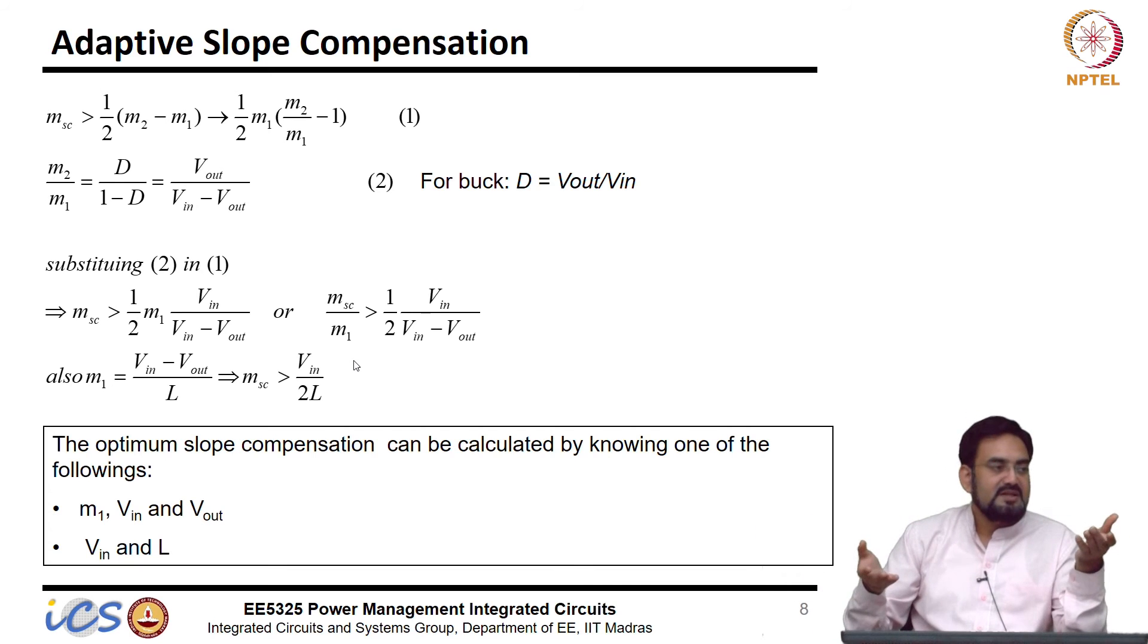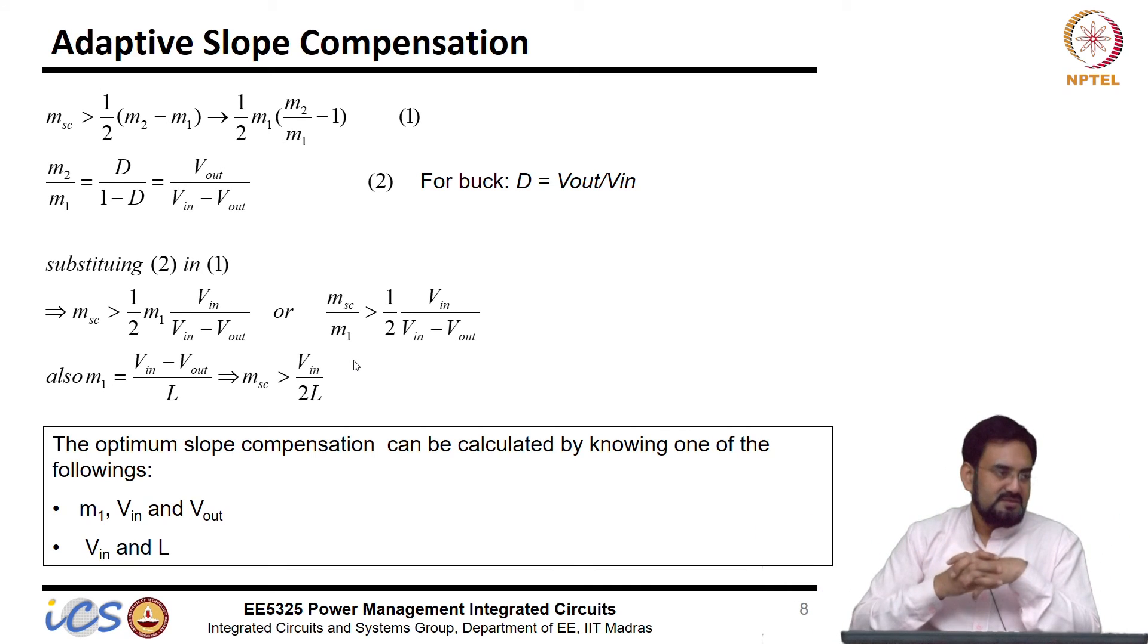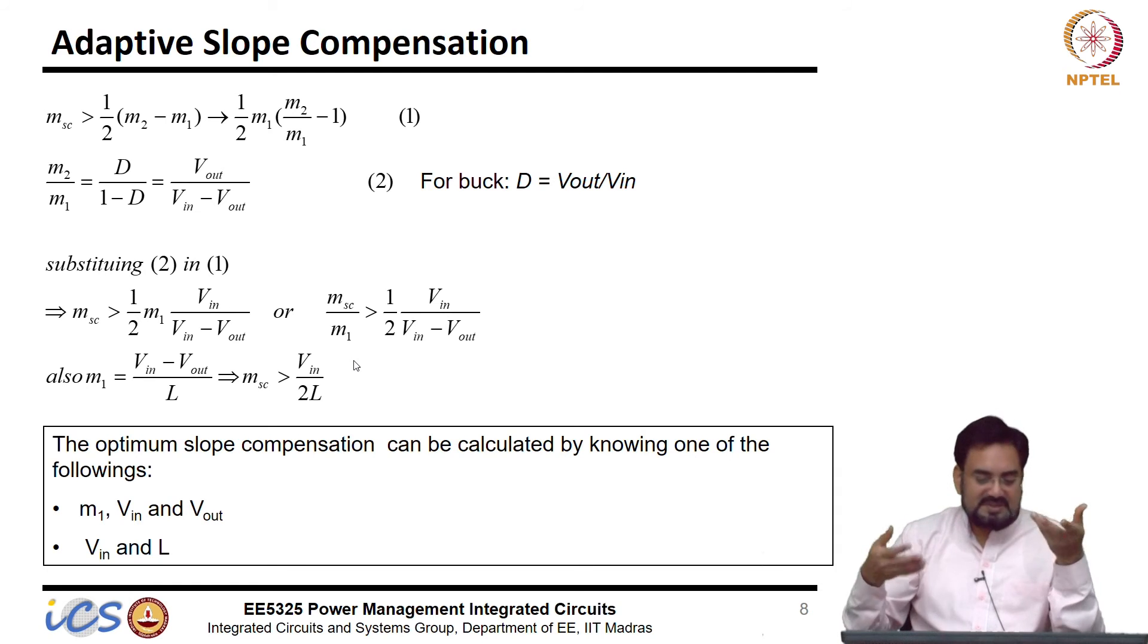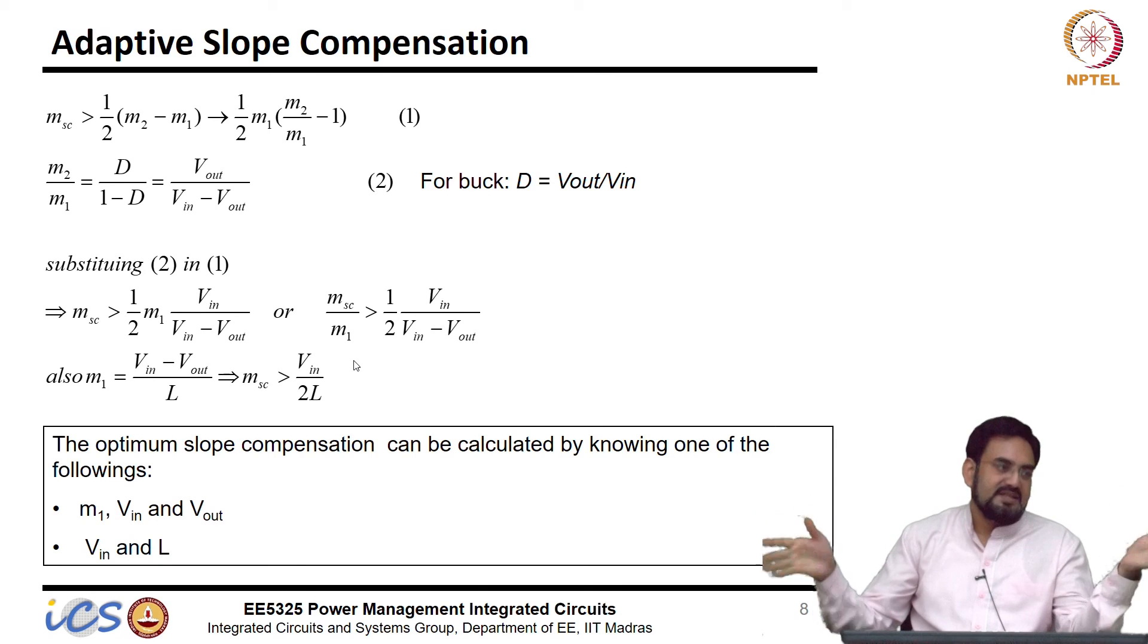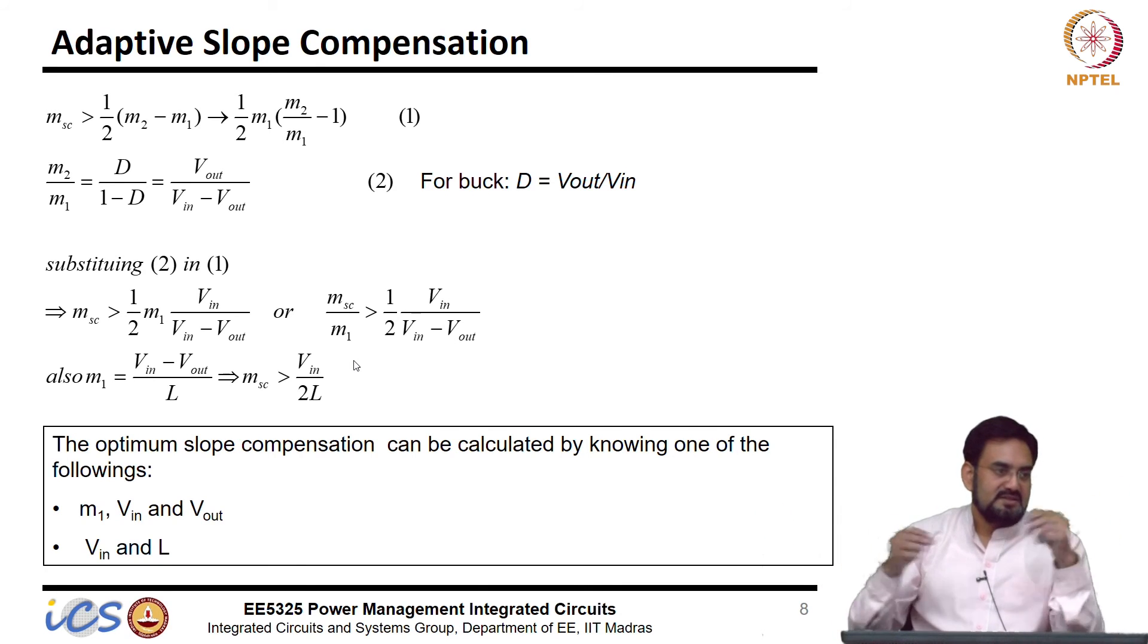So, whether L is known and most of the cases L is known then you can design. If L is not known then Vin Vout is always available, you can take that and design a very accurate compensating ramp. If you fix it then you have to look for the worst case. So, for the other case it may be over compensated, and over compensation is not good for any case.